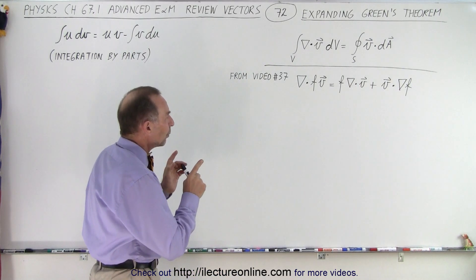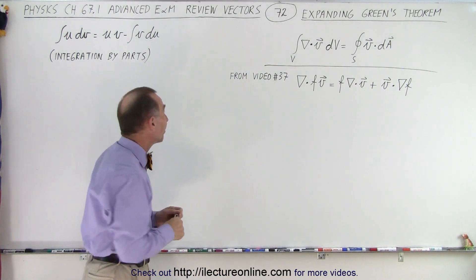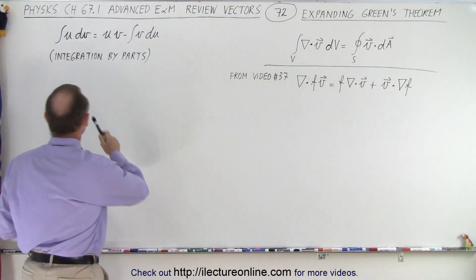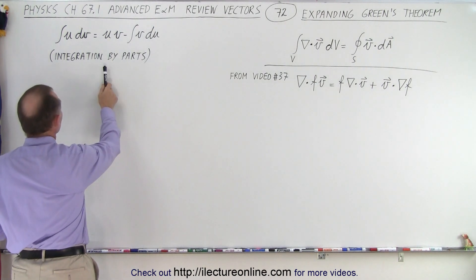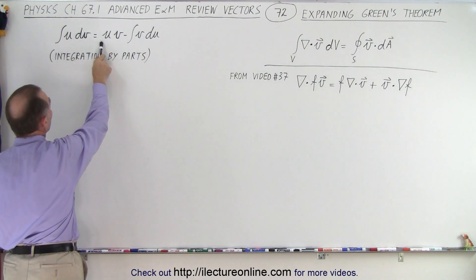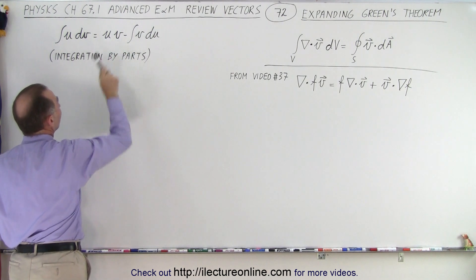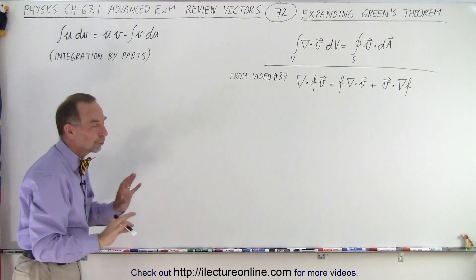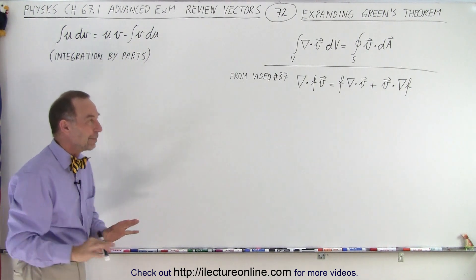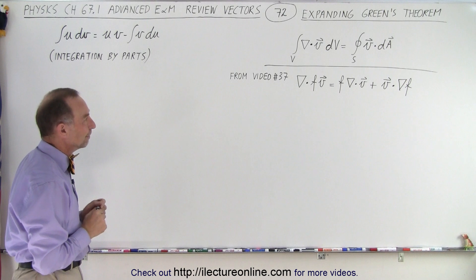Now we also want to employ the concept of integration by parts, where we have the integral of u dv being equal to u times v minus the integral of v du. We're going to employ that same concept to Green's Theorem.